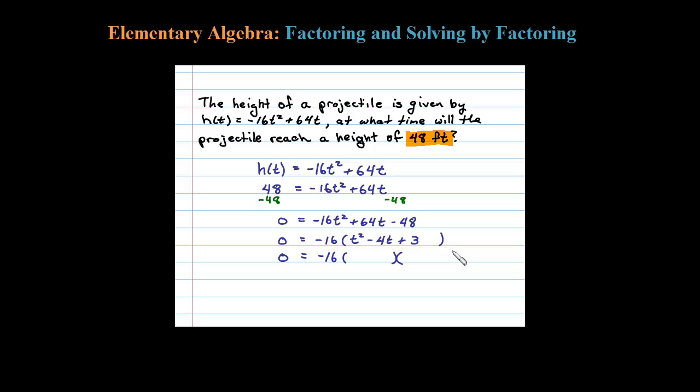Let's continue. Now the numbers are smaller, we can factor that quadratic. T² breaks up as t times t. 3 is prime, so 1 times 3. 1 and 3 add up to -4 if they're both negative. And a negative 1 times a negative 3 is positive 3, so it's factored correctly.